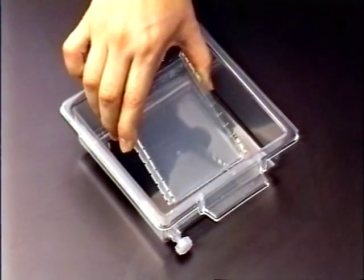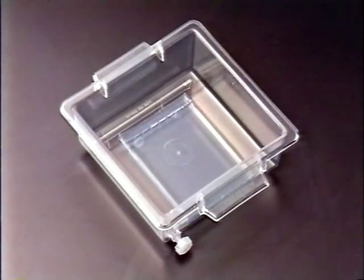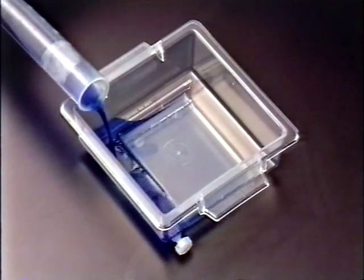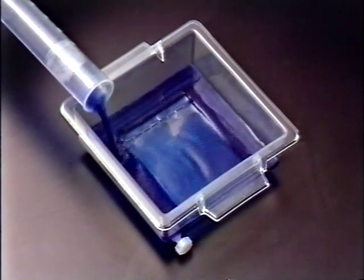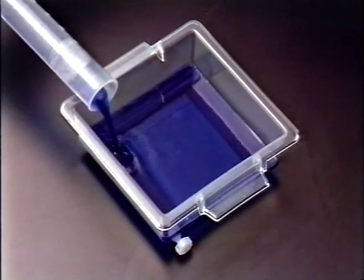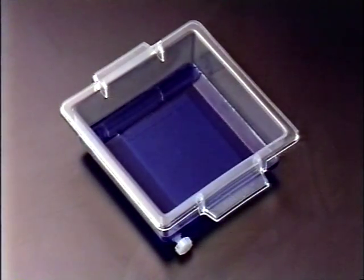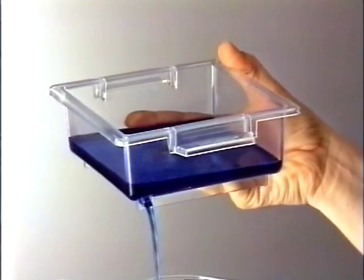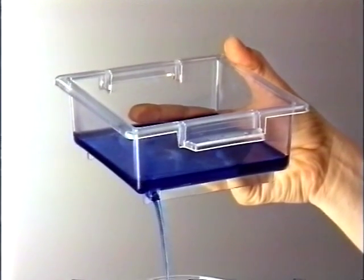Carefully place the gel in a staining tray. Pour approximately 100 milliliters of stain into the staining tray so that the stain covers the gel. Allow the gel to stain for 20 to 30 minutes. Carefully decant the used stain. Make sure the gel remains flat and does not move up against the sides of the staining tray.